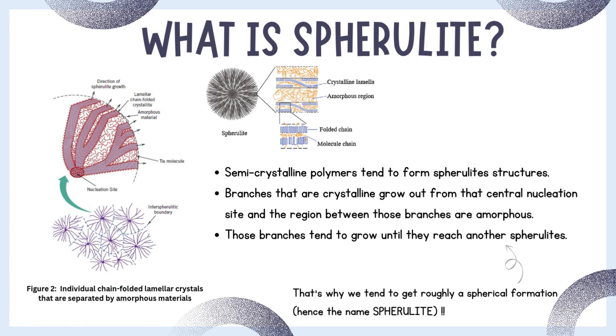What is a spherulite? The diagram shows the semi-crystalline region inside polymers called spherulites. Semi-crystalline polymers tend to form spherulite structures where crystalline branches grow out from a central nucleation site, and the regions between those branches are amorphous. Those branches tend to grow until they reach another spherulite, giving them a roughly spherical shape.